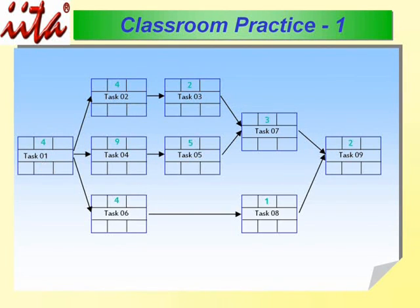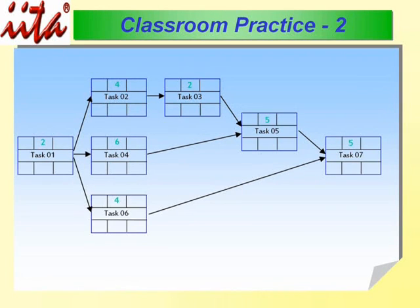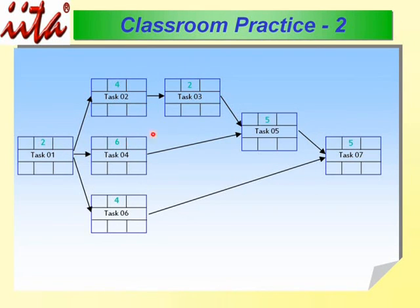Now let's look at another situation. Adding 2 + 4 = 6, plus 2 = 8, plus 5 = 13, plus 5 = 18. Going through the other route: 2 + 6 = 8, plus 5 = 13, plus 5 = 18. Both routes total 18, so we have two critical paths here: Task 1-2-3-5-7 and Task 1-4-5-7.